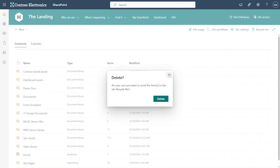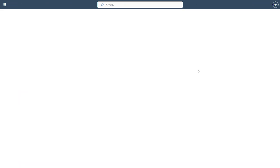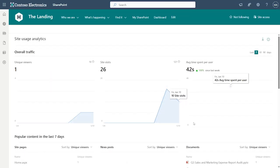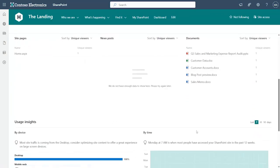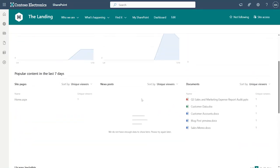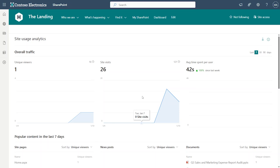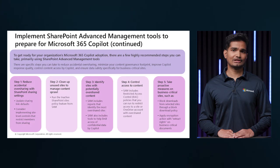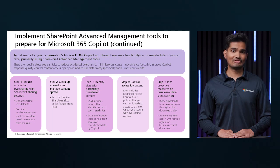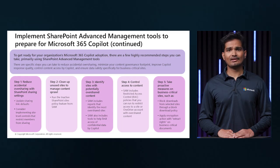SAM has built-in tools to identify oversharing, control Copilot access to content, and manage content lifecycle, which can help with certain regulatory requirements. If you plan to retire content over time, this can be done via the content lifecycle settings. To reduce accidental oversharing with SharePoint sharing settings: update sharing link defaults, implement site-level controls to restrict member sharing, and clean up unused sites to manage content sprawl using the inactive SharePoint sites policy feature from SAM.